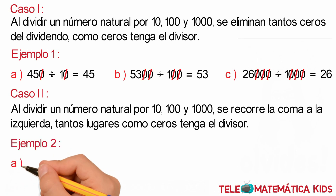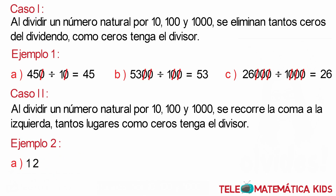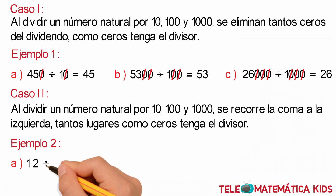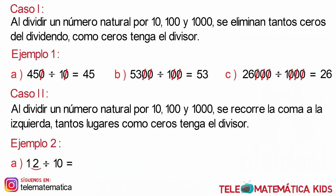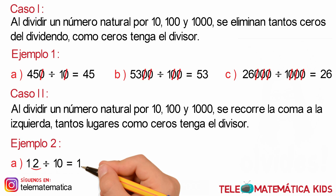Literal A: 12 dividido para 10. Aplicando el procedimiento, como no existen ceros a la derecha del dividendo que podamos simplificar, corremos la coma un lugar a su izquierda y nos quedaría como resultado 1,2.